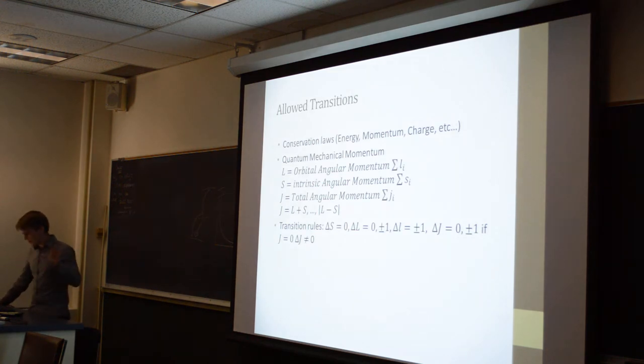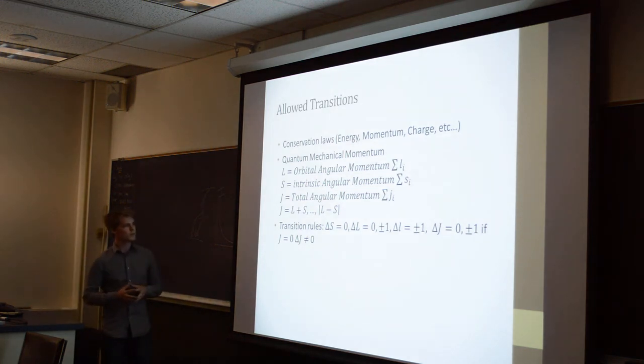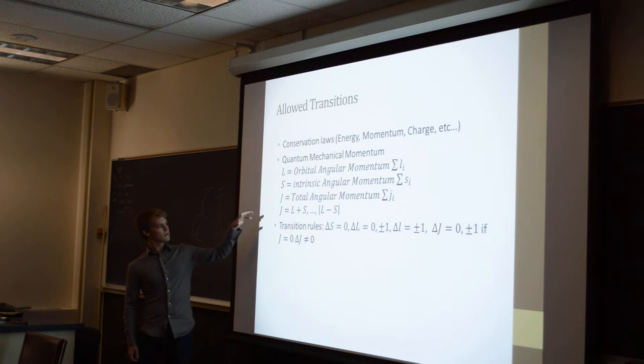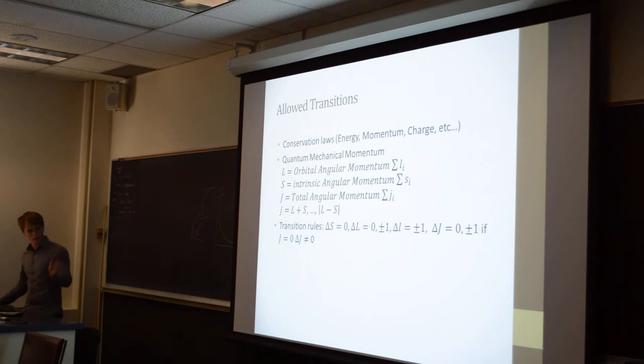So what we need is a little bit of background on the coupling schemes for electrons. And A's already covered most of it, but mathematically it's these transition rules that are important. So you can't change S, delta L can be 0 plus minus 1, and delta J if it's 0.